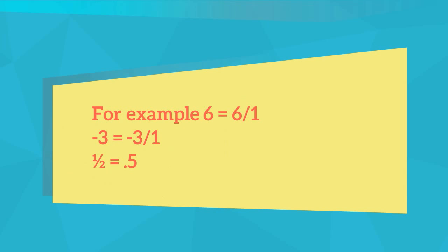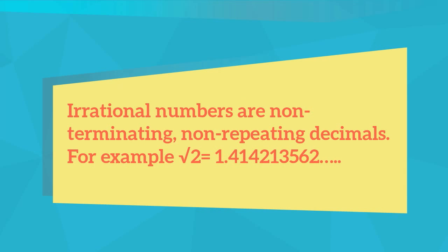1 half is 0.5. On the other hand, irrational numbers are non-terminating, non-repeating decimals. For example, the square root of 2 is this repeating decimal.